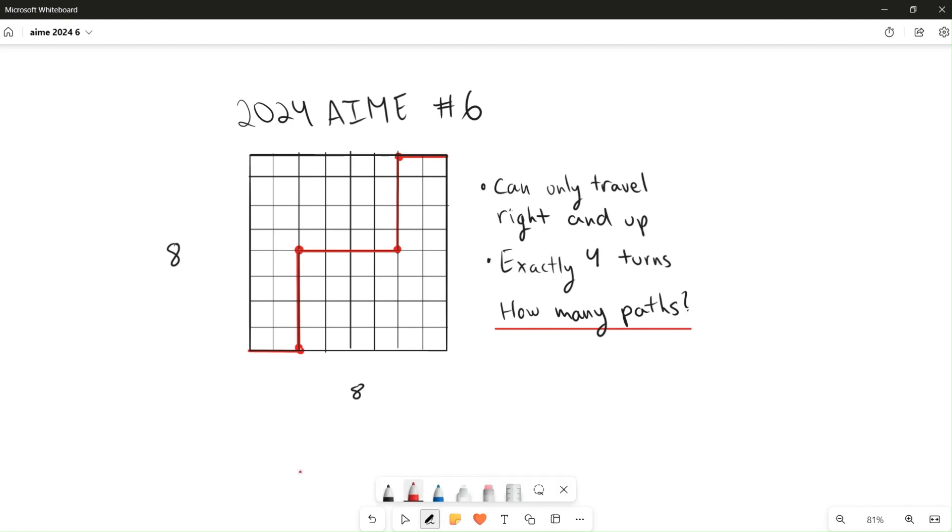To get started, we'll split this problem into two cases. Note that there are paths where the first movement is to the right and paths where the first movement is up, but these cases both have the same number of paths. So we'll simply consider the case where the first movement is to the right and then multiply by two. Multiply by two is something we cannot forget to do at the end.